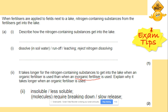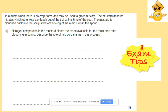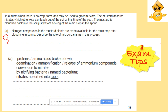Nitrogen compounds in plants are made available for the main crop after ploughing. Ploughing is the process that delivers more oxygen to the soil. Describe the role of microorganisms in this process: proteins and amino acids will be broken down through ammonification, releasing ammonium compounds, then nitrifying bacteria convert these, and nitrates will be absorbed into roots. The oxygen supplied by ploughing is needed for the microorganisms to undergo these processes.